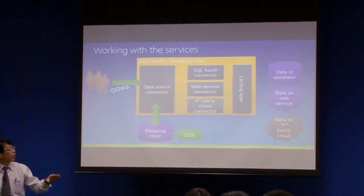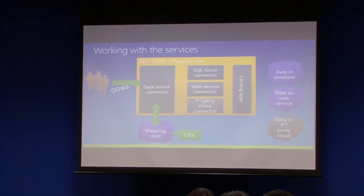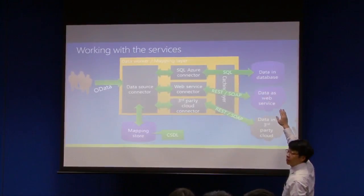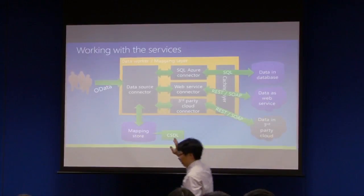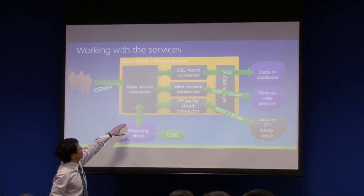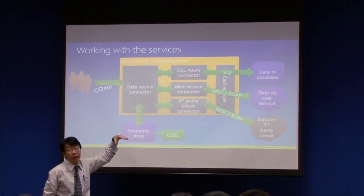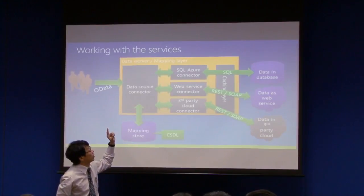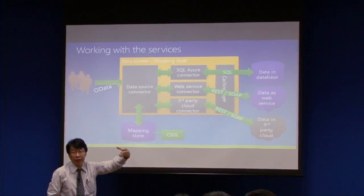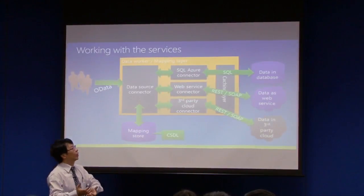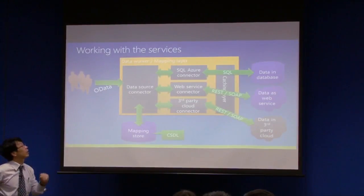There are various ways of getting data, which illustrates the various ways in which content providers interact with and provide their data to Azure Data Market. The most classic way is to use data residing in a database, particularly within SQL Azure. What the data source connector does is get the mapping information, determine that the data resides in a SQL Azure database, do the necessary transformation — map the OData protocol into a SQL query, retrieve the data as a SQL table, and remap it back into OData over HTTP to present it to the user.